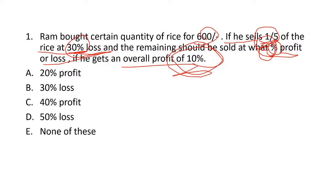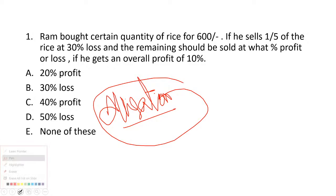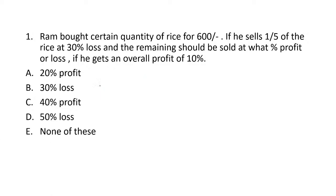This question can be done in many ways, but the easiest method is the allegation method. The total quantity is five parts — he sells one-fifth (one part) at 30% loss, which means he sells it for 70%. We need to find what percent the remaining four parts are sold at.